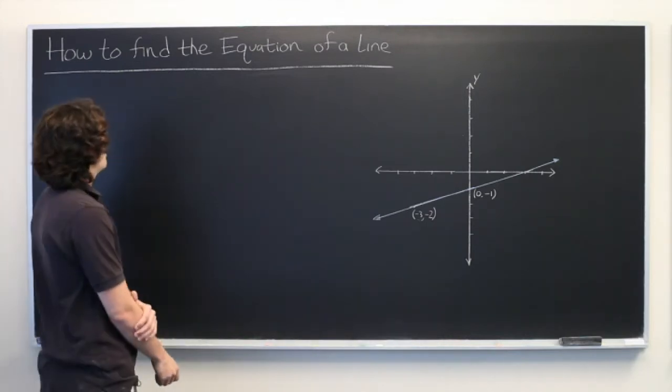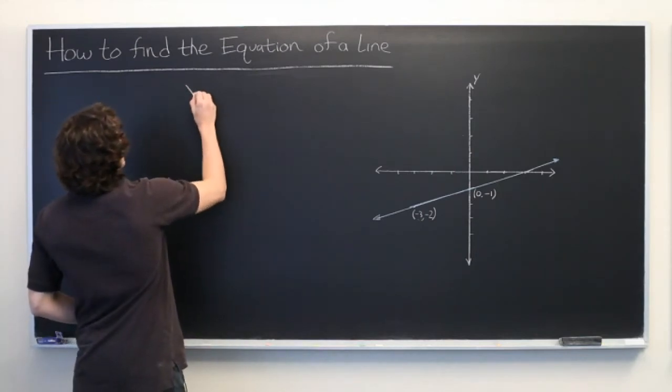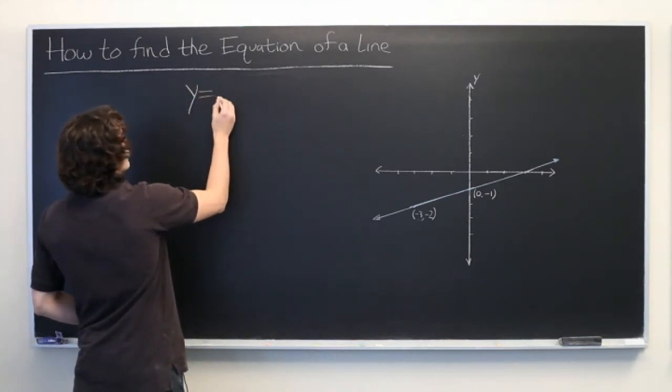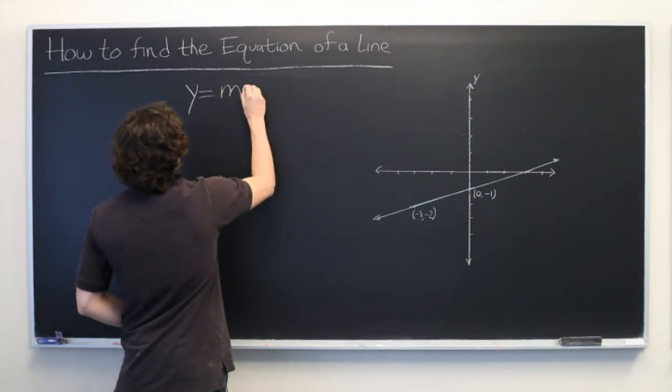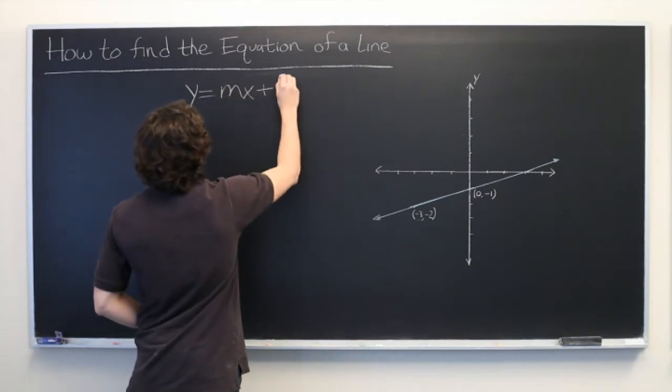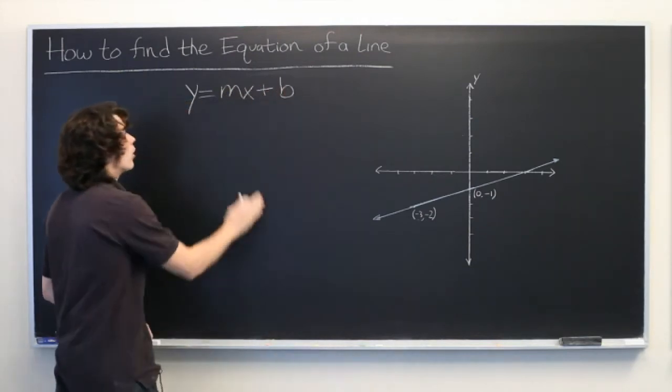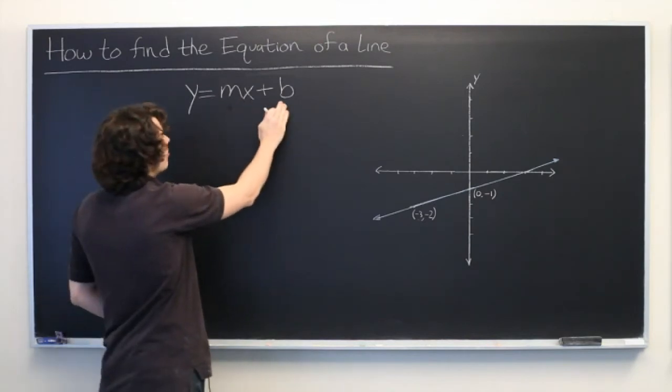There are two main methods for writing out the equation of a line. We have slope-intercept form, which is perhaps the more common, which takes the form y equals mx plus b, where m is the slope and b is the y-intercept.